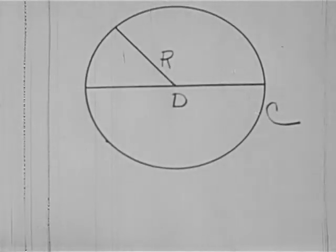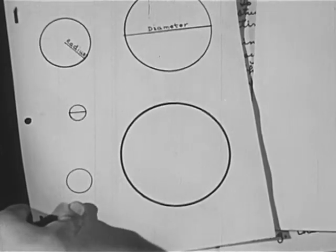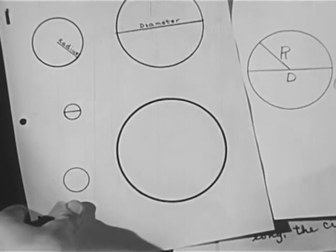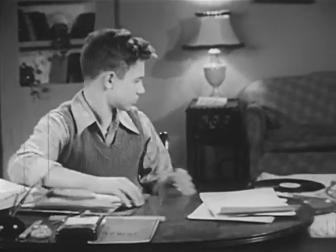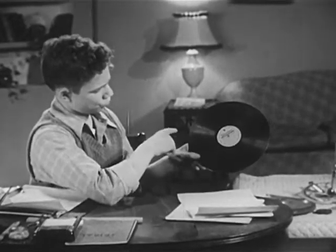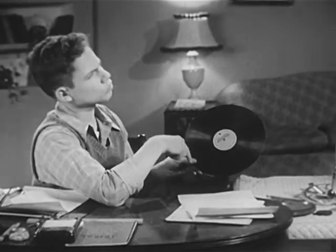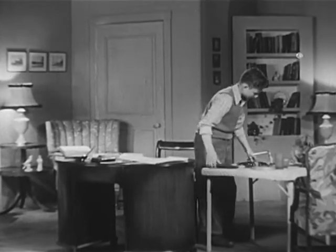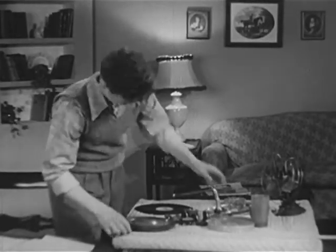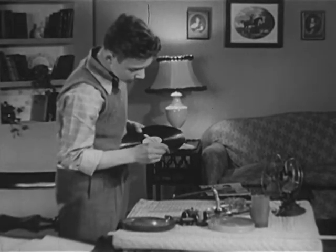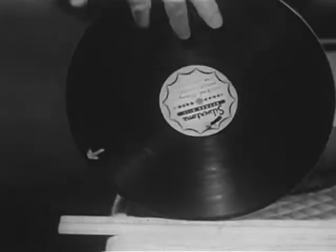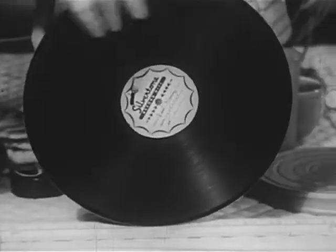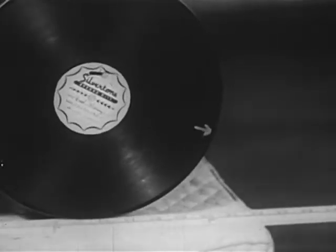And that's as far as I got before — I drew a lot more circles. But what's this about pi? To understand circles means to be able to measure them and compare measurements. That yardstick ought to do the job. Make a point on your circle so you'll know where you began to measure. Just roll your circle over the measuring stick until the arrow comes around again, and you have the length of the circle, or the circumference.